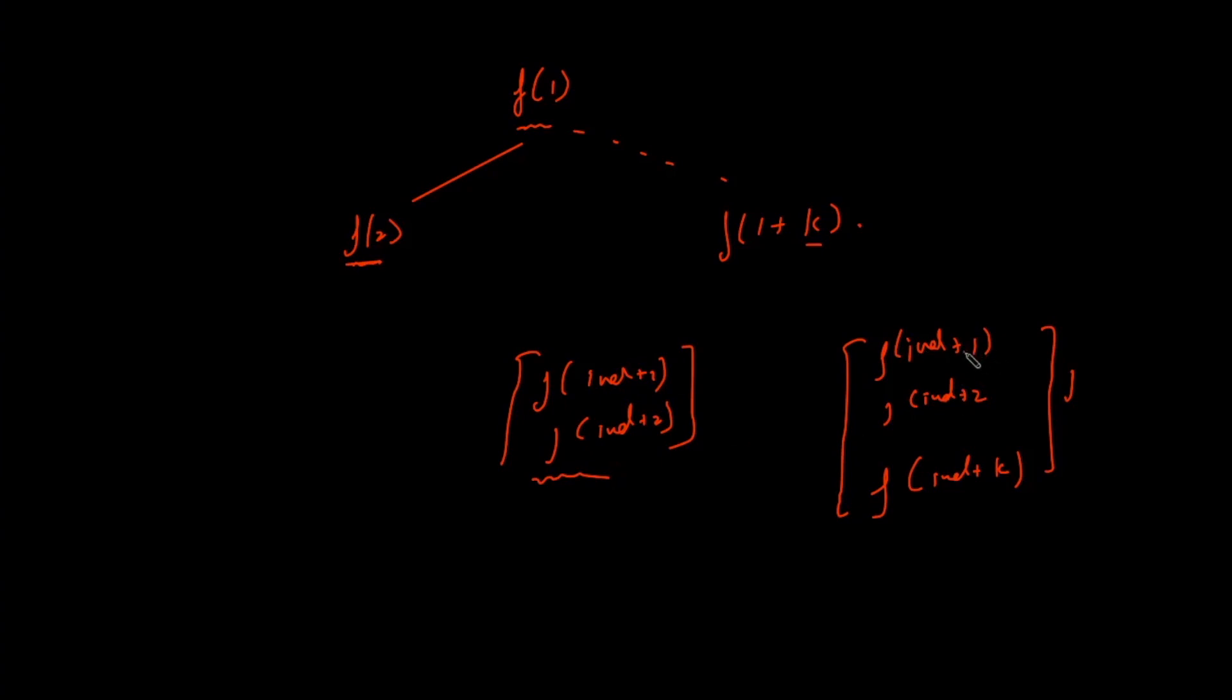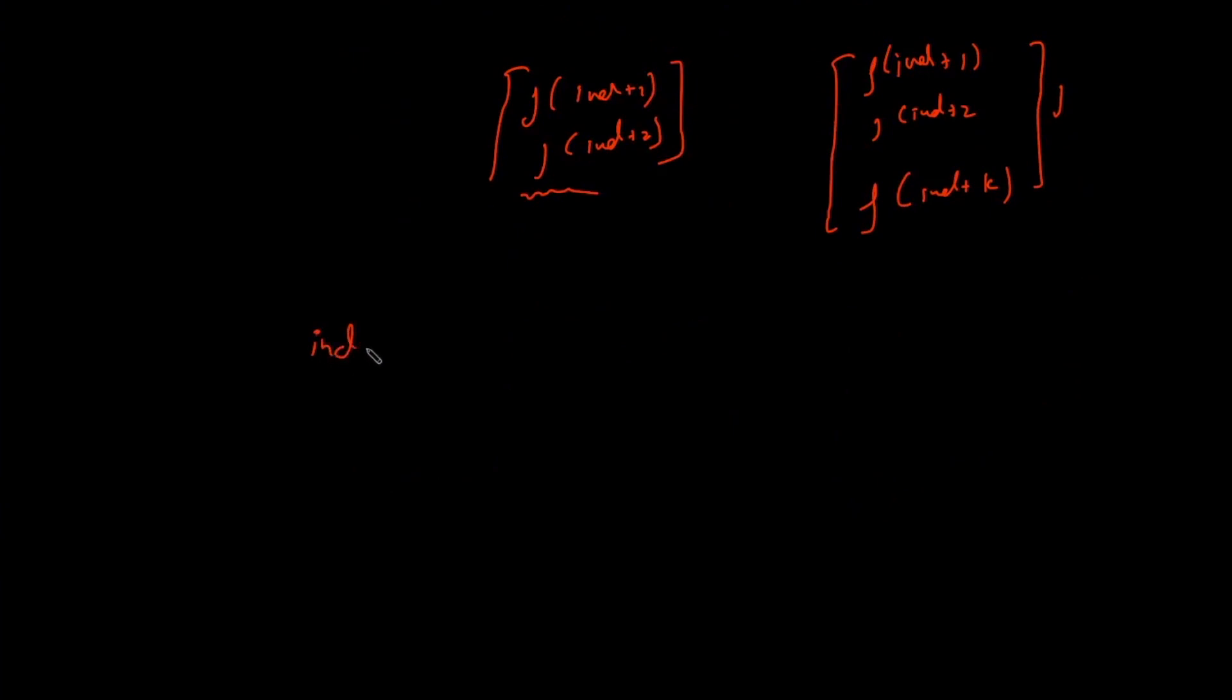But over here, we have k different states that we can visit. That means we are standing at a given index, we can visit to index plus 1 and go on to index plus k.